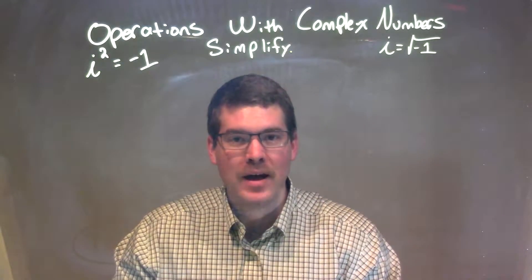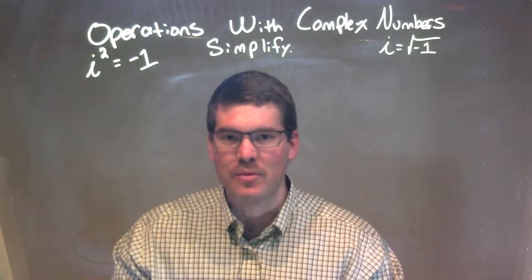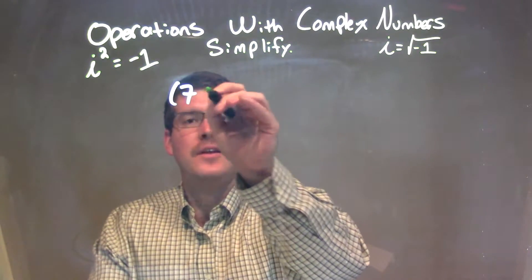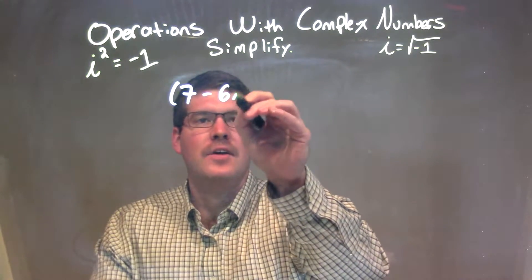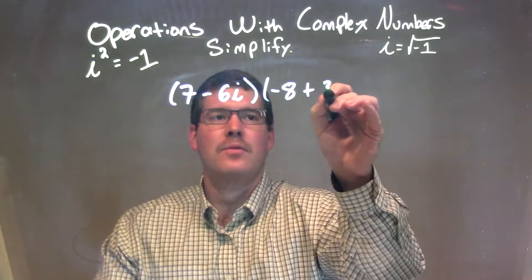Hi, I'm Sean Gann, and this is MinuteMath. Today we're going to learn about operations with complex numbers and simplify. If I was given this: 7 minus 6i times negative 8 plus 3i.